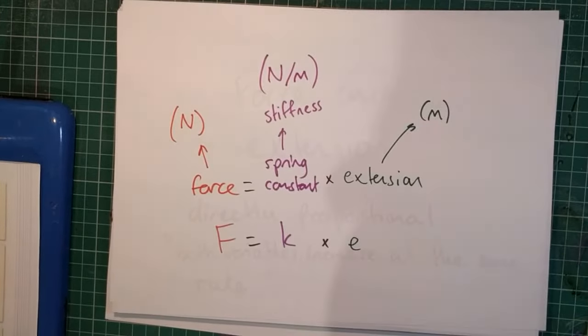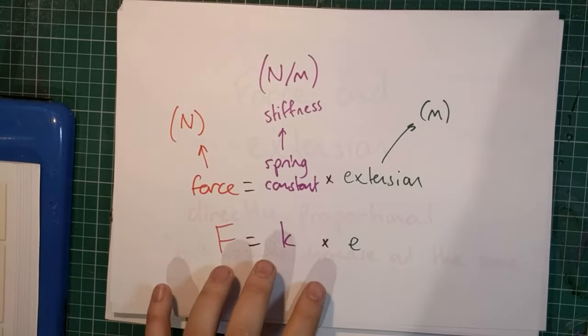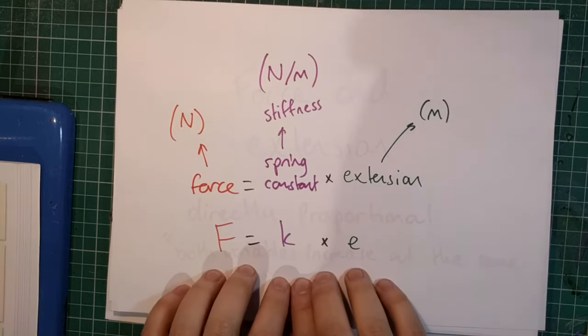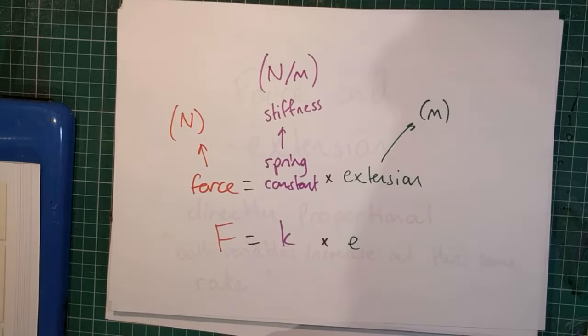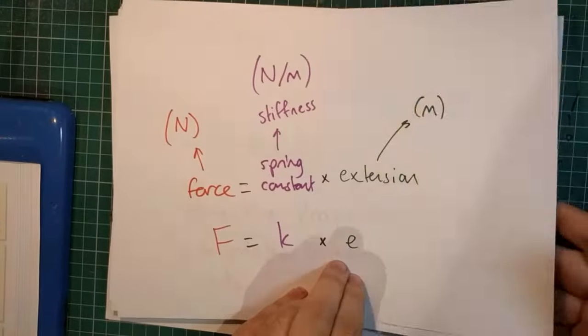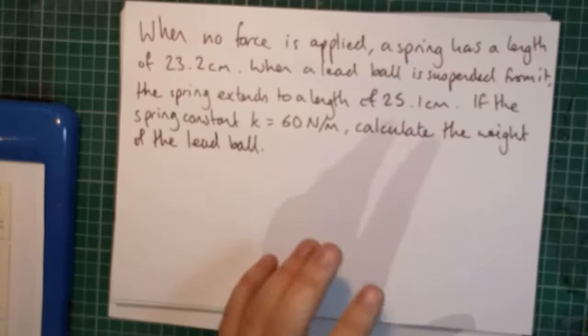Okay. What we're going to do next is have a look at this equation using an exemplar question. One thing to bear in mind, this relationship is only true up to a point. And we're going to talk about that more in the next video, about the limit of proportionality. So let's have a look at an example question.